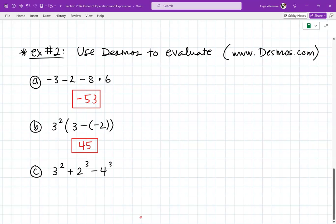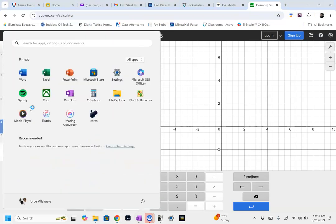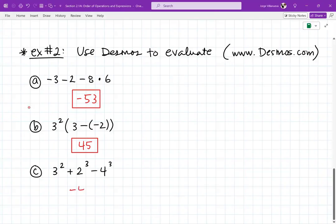And then the last one. 3 squared plus 2 to the third minus 4 to the third. So, we'll go back to Desmos. So, I said 2 squared. Actually, I'm sorry. It's not shift 2. It's shift 6. That's the caret symbol. A little up arrow. So, it was. Oh, I'm sorry. 3 squared. 3 squared plus 2 cubed. So, 2 to the third minus 4 to the third is negative 47. And I'm done. That's it. Negative 47. So, you just got to type it out the way you see it. This program understands, like, order of operations. I know parentheses, meaning, all that stuff. So, negative 47. Let me put that in to our notes. And we'll be done with that section. So, negative 47.